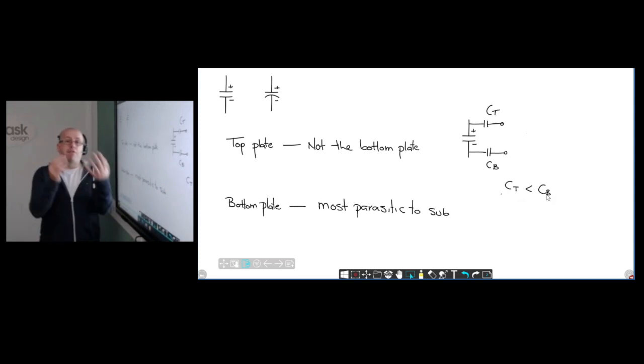Now with MOM caps, which are finger caps, assuming that they're the same number of fingers on both terminals, they're actually completely symmetrical where top and bottom are the same. But assuming they're not, assuming we're talking about MIM capacitors or our typical MOS capacitors, how can we actually use this to our benefit?